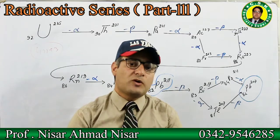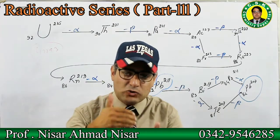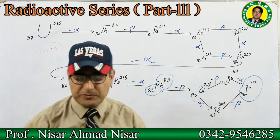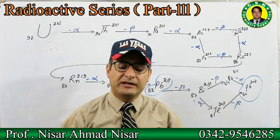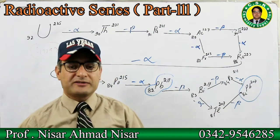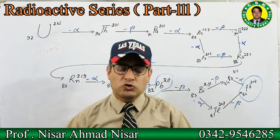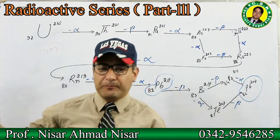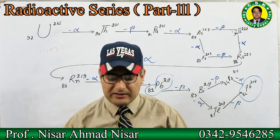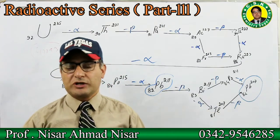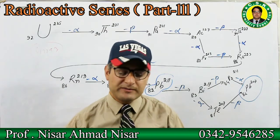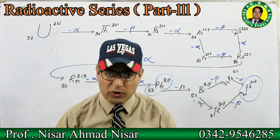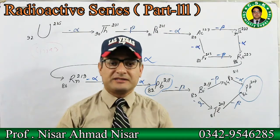Lead-206, lead-207, and lead-208 are all stable isotopes. This is the third naturally occurring radioactive series. The three series are: the uranium series, the thorium series, and the actinium series. This completes the actinium series, which ends at the stable isotope lead-207.